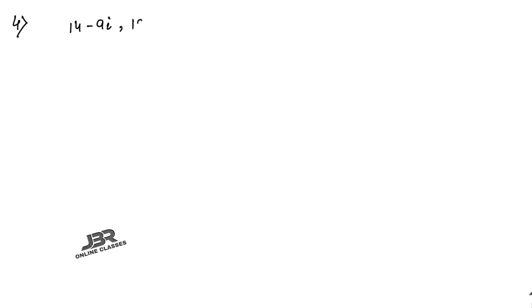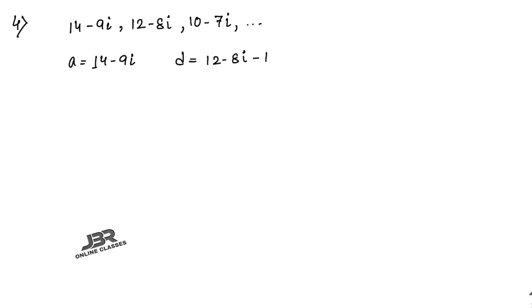Problem 4: Which term of the sequence 14−9i, 12−8i, 10−7i, ... is (a) purely real and (b) purely imaginary? Here a = 14−9i and d = (12−8i) − (14−9i) = −2 + i.